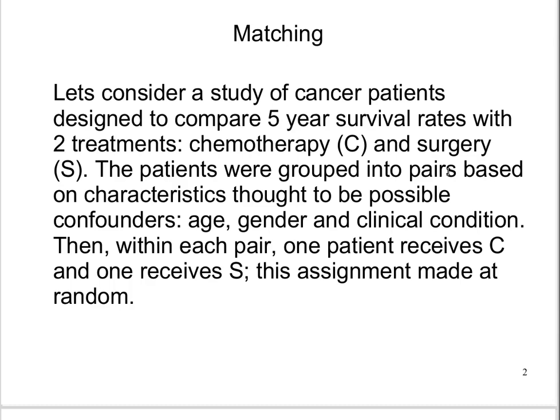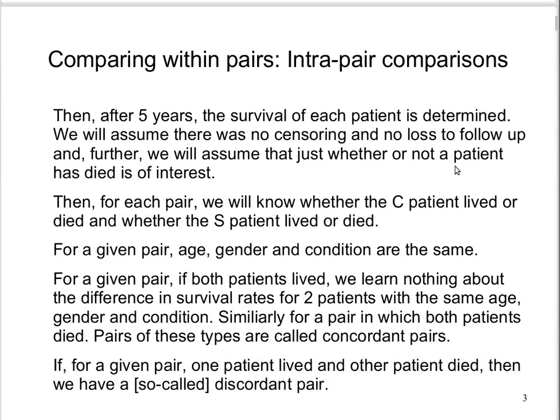The randomization occurs within each pair, so it is not complete randomization. It is the matching which builds into our study a lack of independence between measurements, and this is an issue that will come up as we establish how such a study needs to be analyzed. We will also be presuming that five-year survival is known for each individual — there's no censoring and no loss to follow-up. We will simply know whether or not a patient has died.